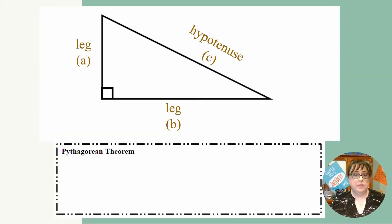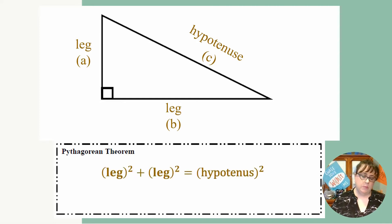Now that we have our triangle labeled, we're going to talk about the Pythagorean theorem, which many of you are probably familiar with, but we're going to formalize it. The Pythagorean theorem says that the sum of the two legs squared is equal to the hypotenuse squared. In variables, we say that A squared plus B squared, that's the sum of the two legs, is equal to C squared.